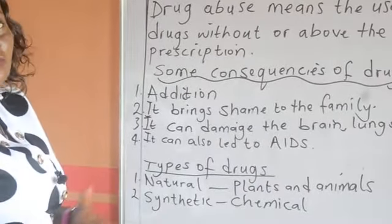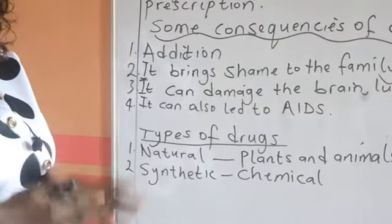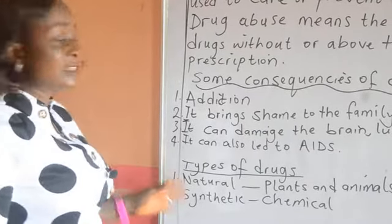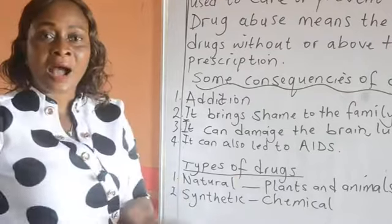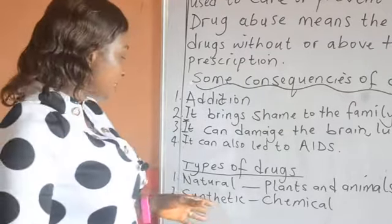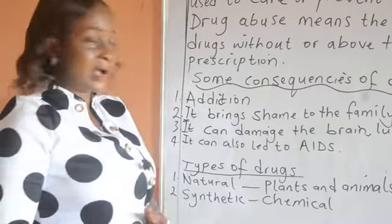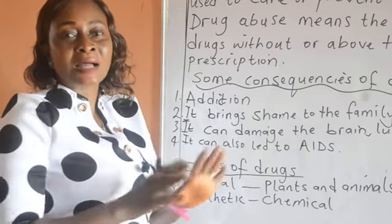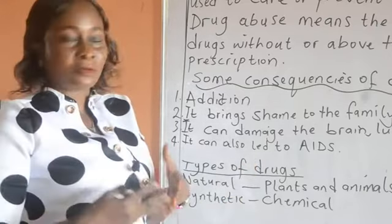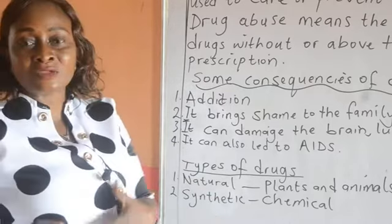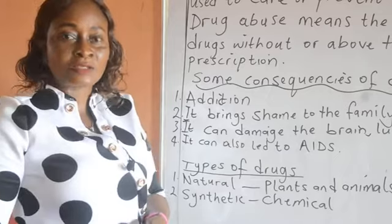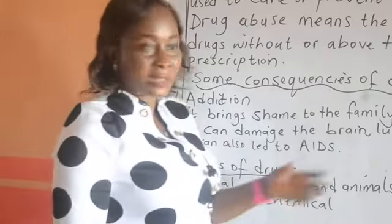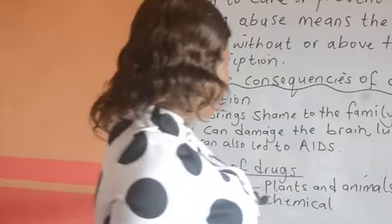What are the types of drugs that we have? Drugs can be broadly classified under two headings: natural and synthetic drugs. Natural drugs are drugs gotten from plants and animals, while synthetic drugs are drugs gotten from chemicals — the mixing of two or more chemicals to form another chemical entirely. So drugs gotten from natural sources, through plants and animals, are known as natural drugs.